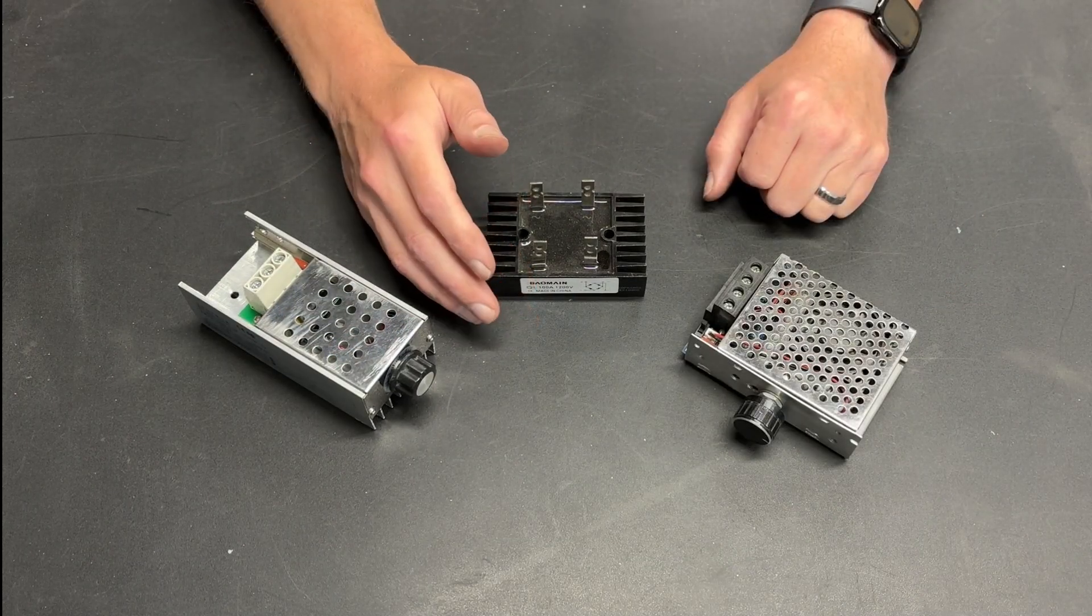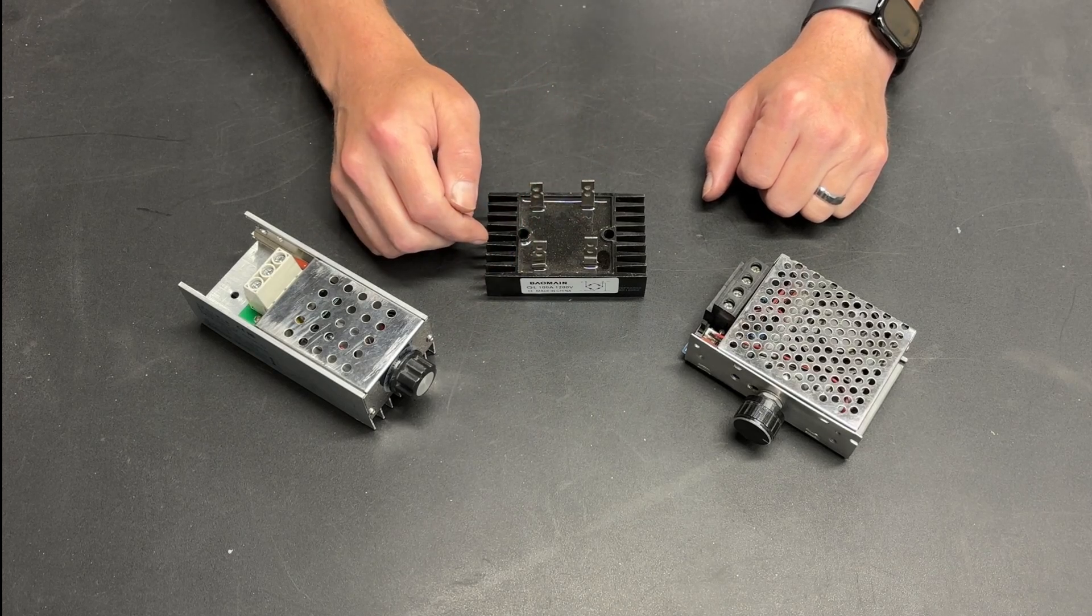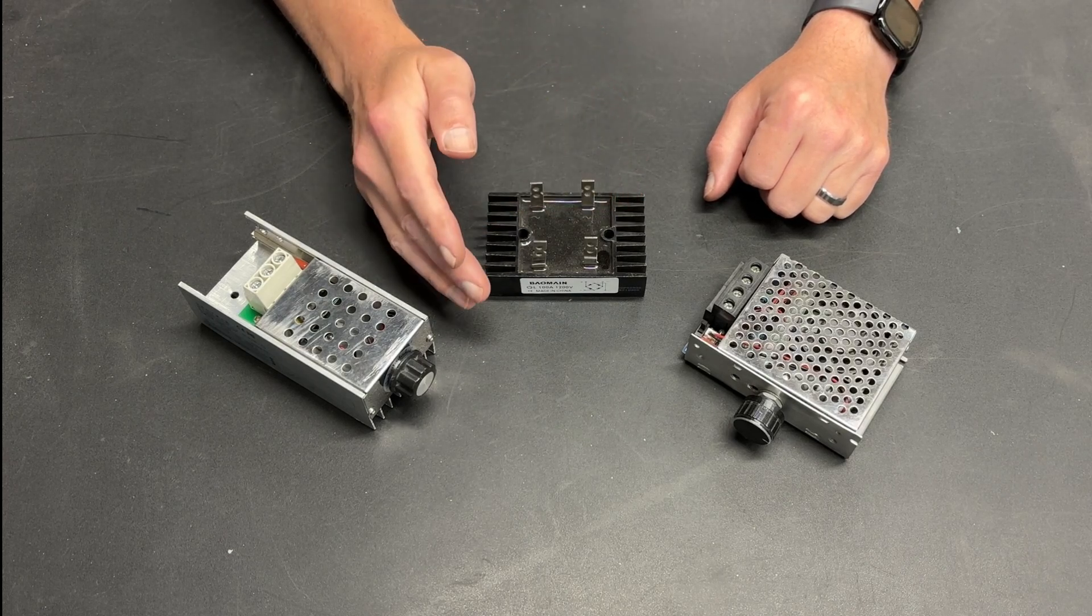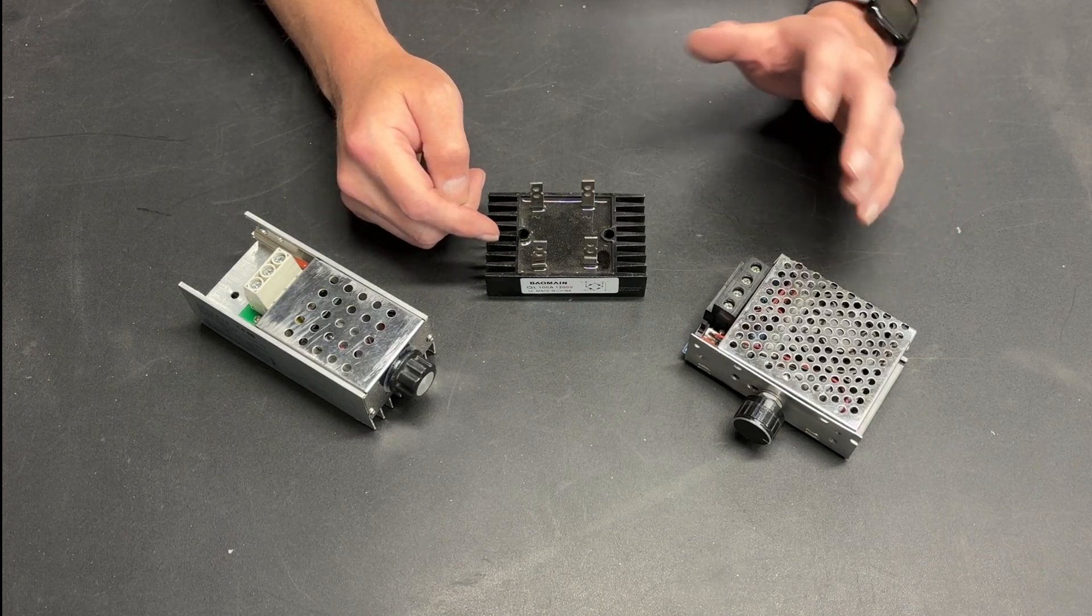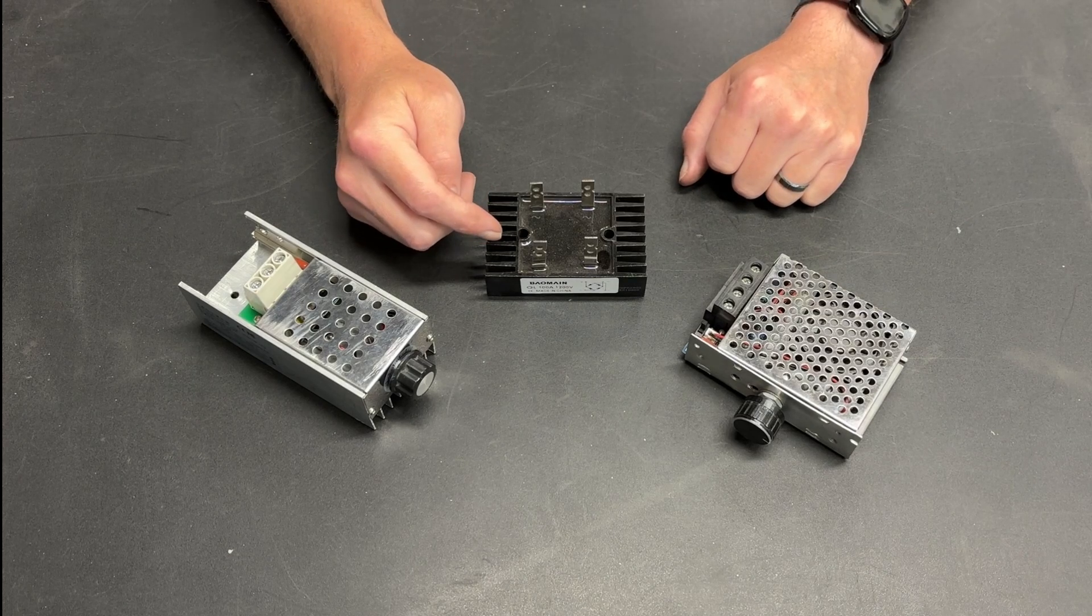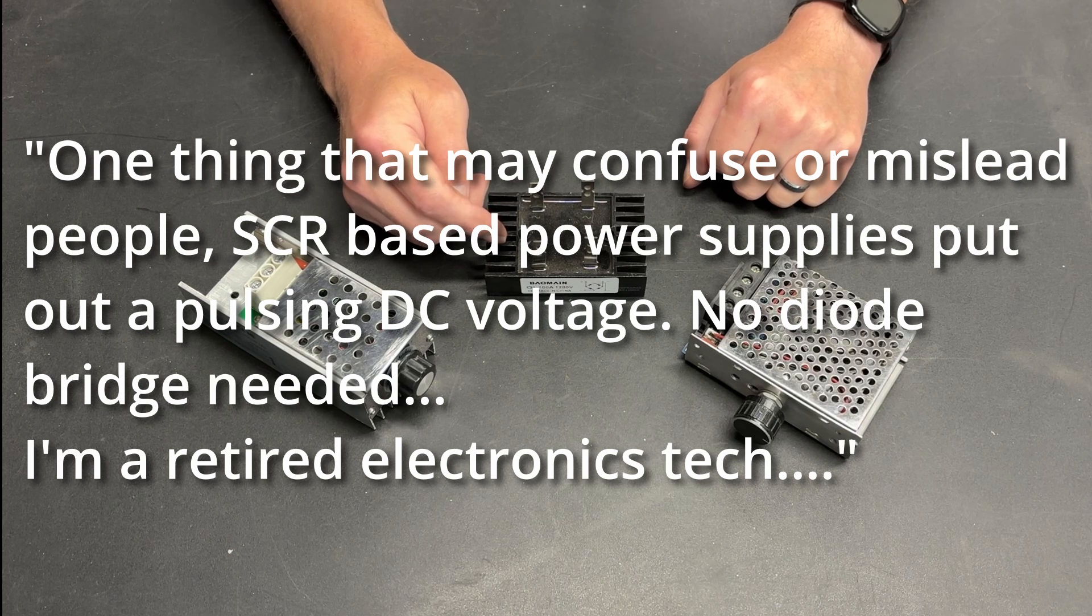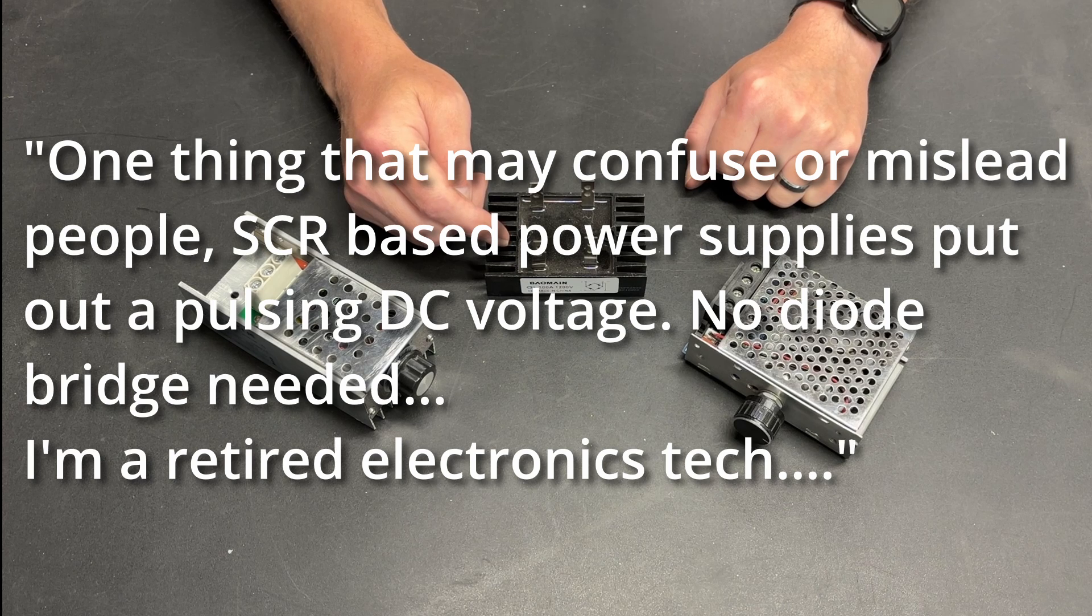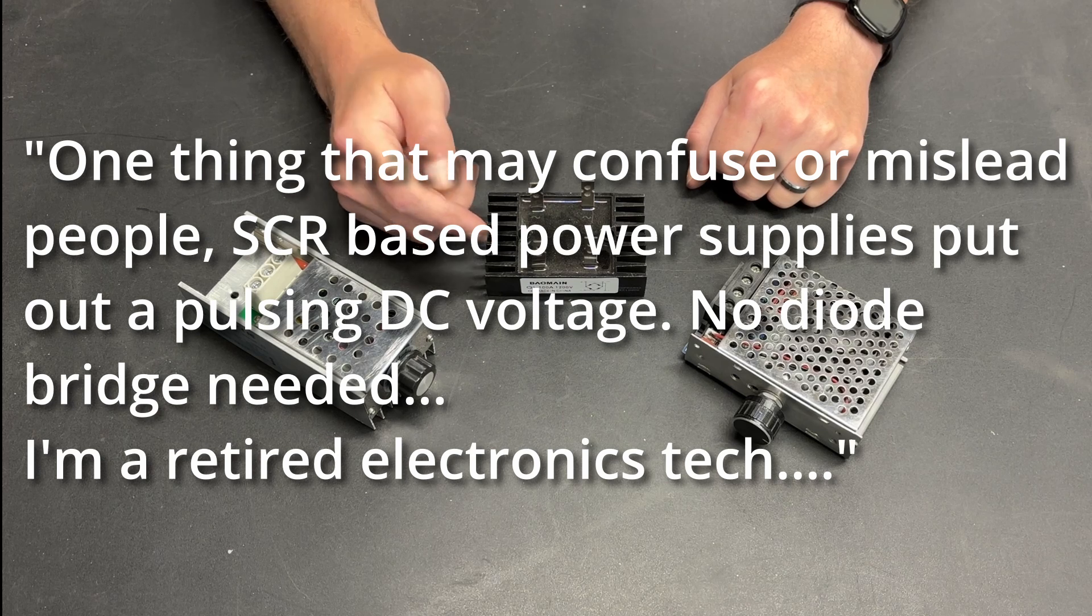So, in regards to my error, I received a comment in the comments section on one of my SCR voltage controller videos. I try to get in and read all those comments, so if you have any questions or feedback, please feel free to post a comment, because in this particular case, it significantly helped me educate myself. The comment in question was this: One thing that may confuse or mislead people, SCR-based power supplies put out a pulsing DC voltage. No diode bridge needed. I'm a retired electronics tech.